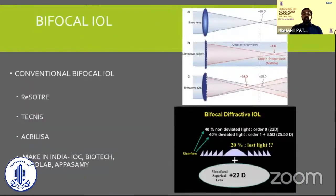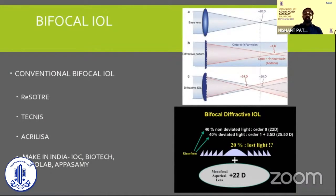In the primary basic bifocal IOL of diffractive design, you have diffraction at zeroth order and first order. The zeroth order accounts for about 40% of light, which is non-deviated and dedicated for distance vision. The remaining 48% for the first order is deviated for near vision. Importantly, 20% of the light is lost — and this is what we focus on when moving to trifocal IOLs, because this lost light is what causes visual disturbance.